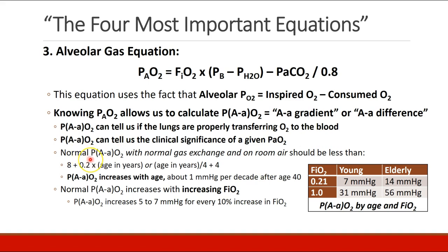If a patient has a normal A-a difference with normal gas exchange on room air, we expect this value to be either 8 plus 0.2 times their age in years, or age divided by 4 plus 4. In general, for a young person breathing room air, we expect an A-a difference of around 10. As a patient gets older, the A-a difference increases about a millimeter of mercury per decade after age 40. So for an elderly patient, instead of 7, I'd expect their A-a difference to be more like 14 or 15.